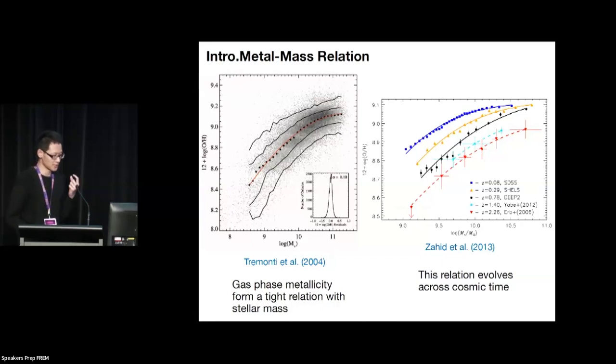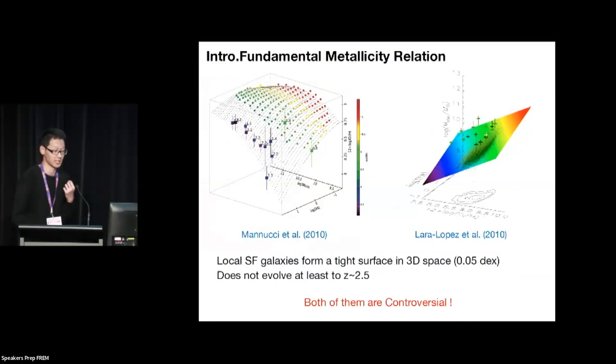So even though this relationship is very tight, astronomers are not satisfied. They consider that there's dependence on some other parameters that can further reduce the scatter. So the star formation rate comes to their mind, because we also know that there is a tight relationship between the star formation rate and the stellar mass, which is the star-forming main sequence.